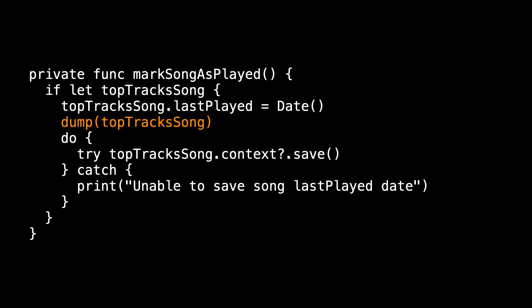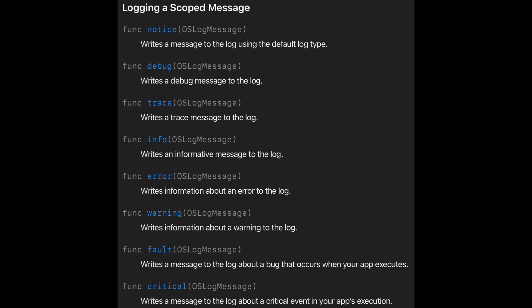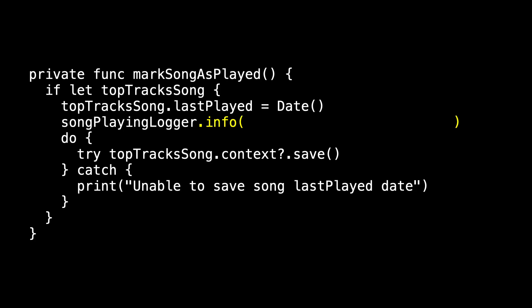I was dumping the top track song — let's replace that with our logger. We'll ask our song playing logger to display info. I chose info, but there are many levels of logging I could have chosen, based on whether it's an error, a warning, or I'm just tracking something all the way through. This is just basic information, so that's why I'm using info. The message I want to display is that I'm playing, followed by the top track song description.